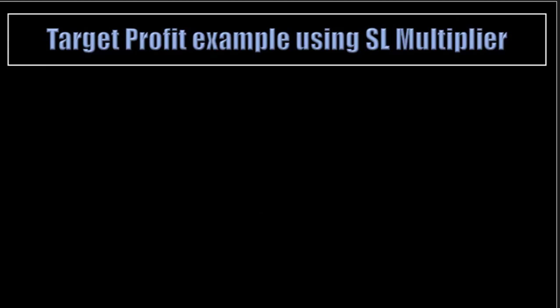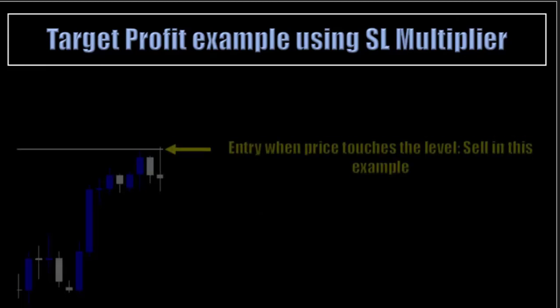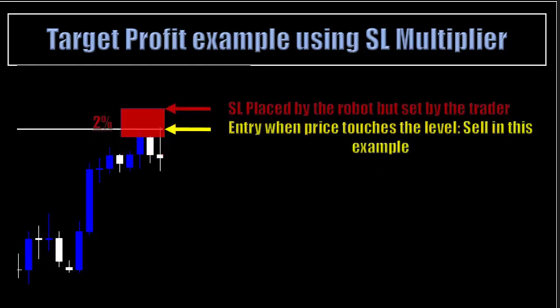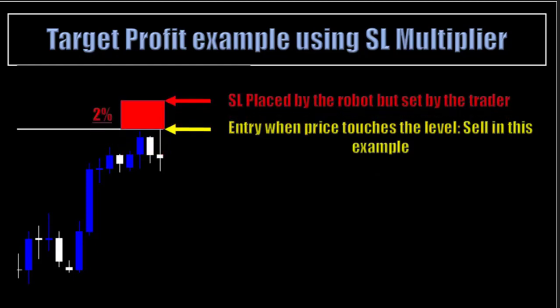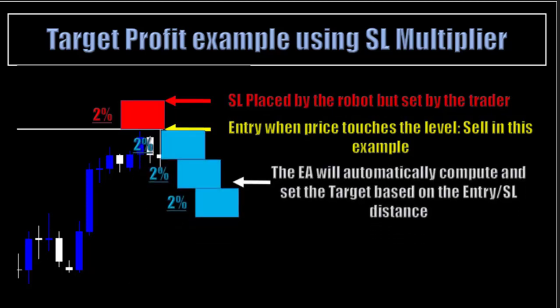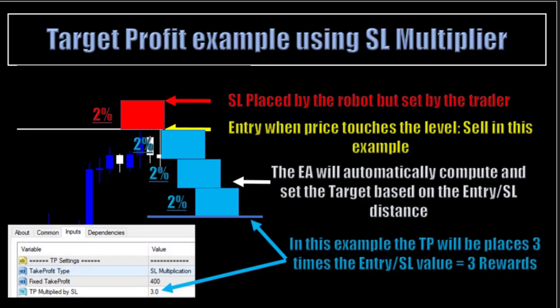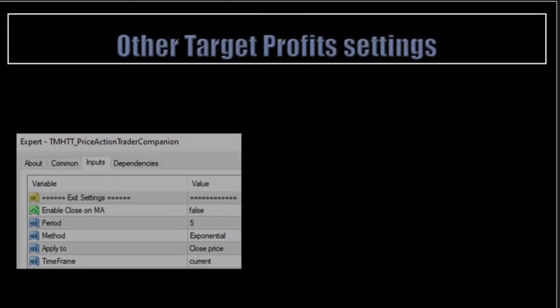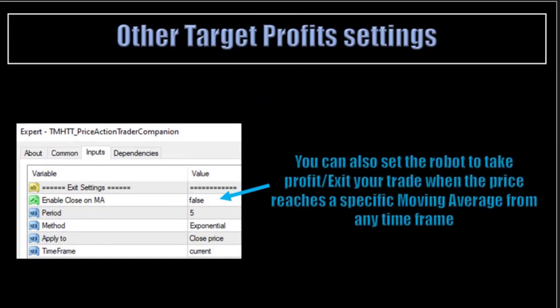Target profit example using stop-loss multiplier. On this chart, you enter at the level and a specific amount of pips is placed with your stop-loss, representing 2% of your account. The EA will automatically compute and set the target based on the entry-to-stop-loss distance. In this example, the TP will be placed 3 times the entry-stop-loss value, equal to 3 reward. You can also set the robot to take profit and exit your trade when the price reaches a specific moving average from any timeframe.